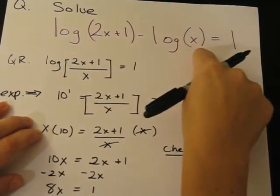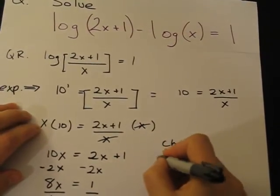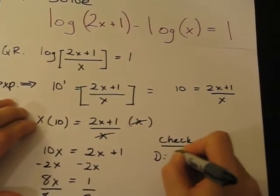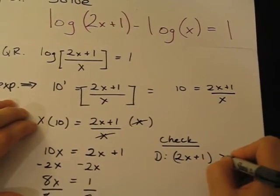So we look at just this piece and this piece to determine domain. So domain is 2x + 1 must be greater than 0.